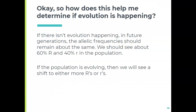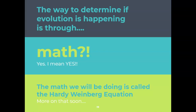How does that tell us if evolution is happening? If future generations of flowers don't show that same 60/40 ratio, then we can tell evolution is occurring — we can see the shift and say this population is changing. We're going to do some math called the Hardy-Weinberg equation in our next lecture to crunch those numbers and figure out if the change is small or large, and whether the population is evolving or just staying stable.